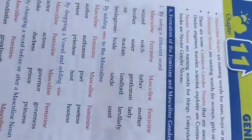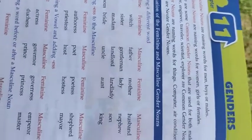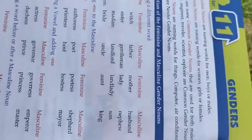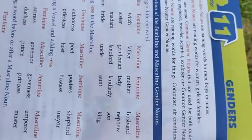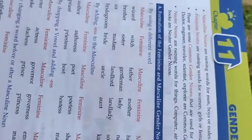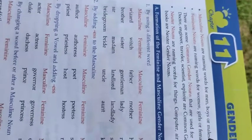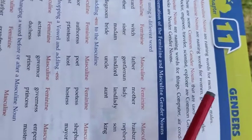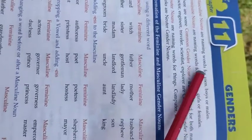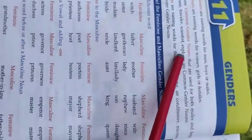Hello class. Today we are going to learn Chapter 11: Genders, which are the simpler forms of grammar you can know. Genders are of three types — you can see here: masculine nouns, feminine nouns, and common gender nouns.